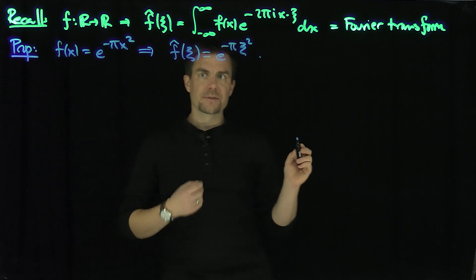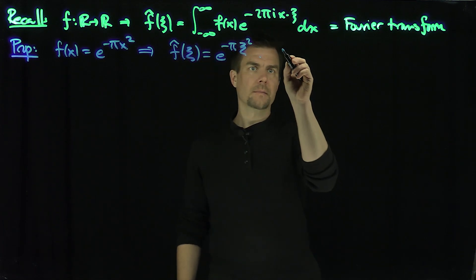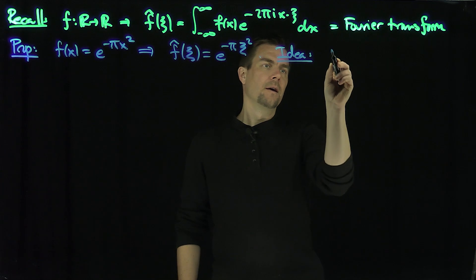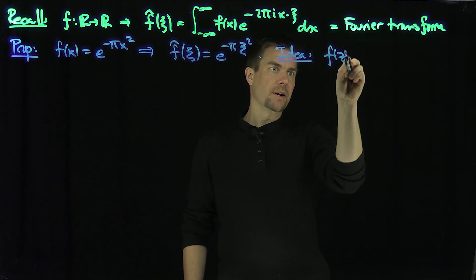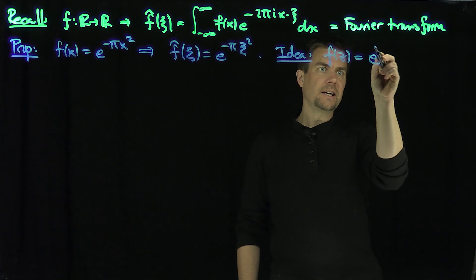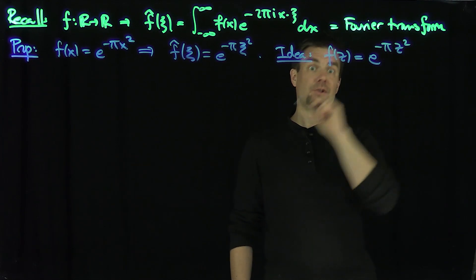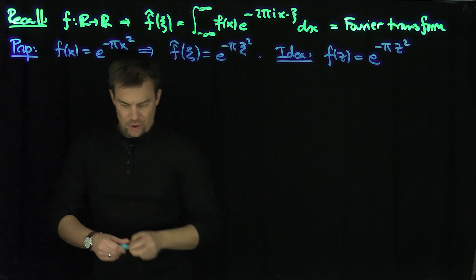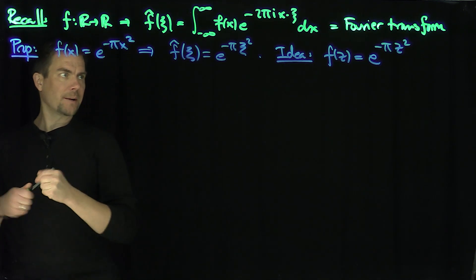The idea is to look at f(z) = e^{-πz²} — we're going to extend f to the complex plane — and then draw a contour and try to use Cauchy.